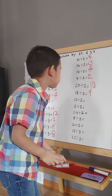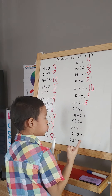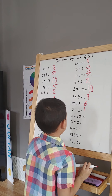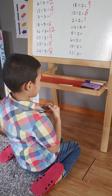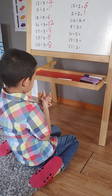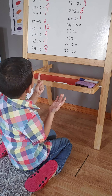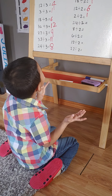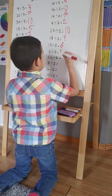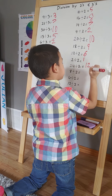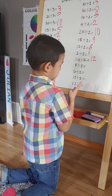So 6. 2 divided by 2. So 1 is the answer. 24 divided by 2. 2, 4, 6, 8, 10, 12, 14, 16, 18, 20, 22, 24. 12. 8 divided by 2. 2, 4, 6, 8. So 4.